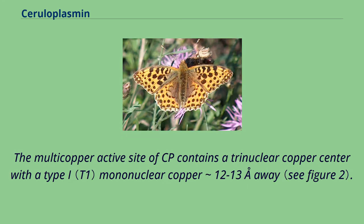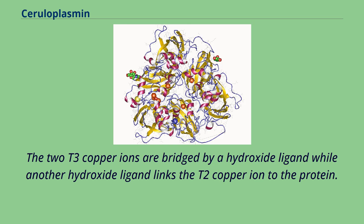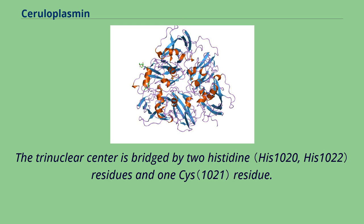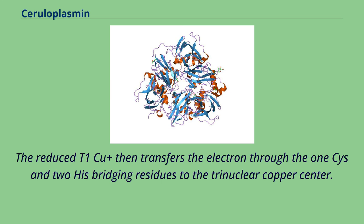The multi-copper active site of CP contains a trinuclear copper center with a type I mononuclear copper 12 to 13 angstroms away. The trinuclear center consists of two type III coppers and one type II copper ion. The two T3 copper ions are bridged by a hydroxide ligand, while another hydroxide ligand links the T2 copper ion to the protein. The trinuclear center is bridged by two histidine residues and one cysteine residue. The substrate binds near the T1 center and is oxidized by the T1 Cu2+ ion, forming the reduced Cu+ oxidation state. The reduced T1 Cu+ then transfers the electron through one cysteine and two histidine bridging residues to the trinuclear copper center.